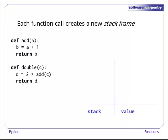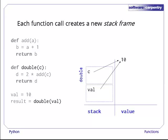Let's have a look at another example. Here we have two functions, add and double. In our main program, we give val the value 10. We then call the function double, which creates a new stack frame. Initially, that stack frame only contains the variable c, which is the function's sole parameter, and that variable points at the value that was passed into the function.